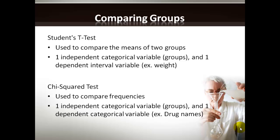How did we come to this p-value? This leads us to statistical tests, which we use to compare groups. I'm discussing two examples today: the Student's t-test and the chi-squared test. The choice of statistical test is usually dependent on the outcome you're looking for as well as the type of data. The Student's t-test is used when there is one independent categorical variable (the group) and one dependent interval variable, for example weight. The chi-squared test is used when there is one independent categorical variable (the group) and one dependent categorical variable, such as drug names, colors, or gender — normally in situations involving many categorical variables described using frequencies.